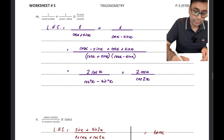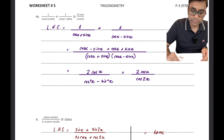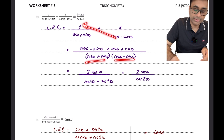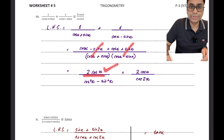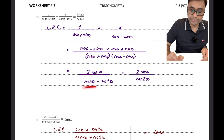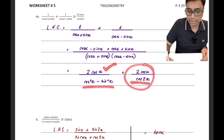Another example with fractions: taking (cos x + sin x)(cos x - sin x) as LCM. Cos x - sin x multiplies the first fraction and cos x + sin x multiplies the second. The numerator becomes 2 cos x (since the sin x terms cancel) and denominator becomes cos²x - sin²x = cos 2x. So the result is 2 cos x / cos 2x, which is what I had to prove.